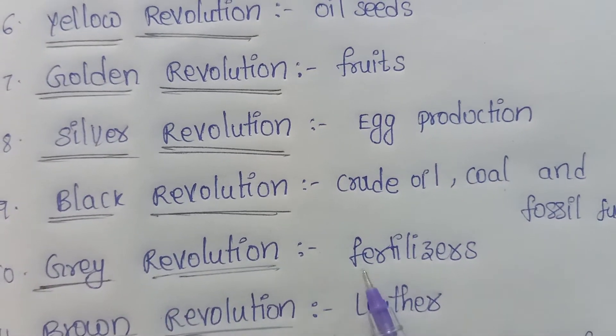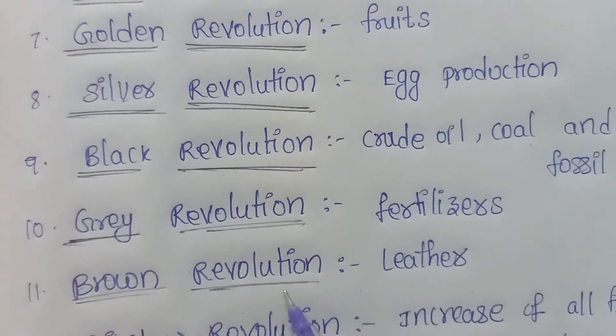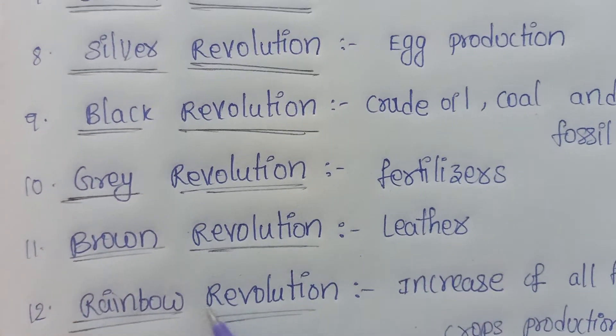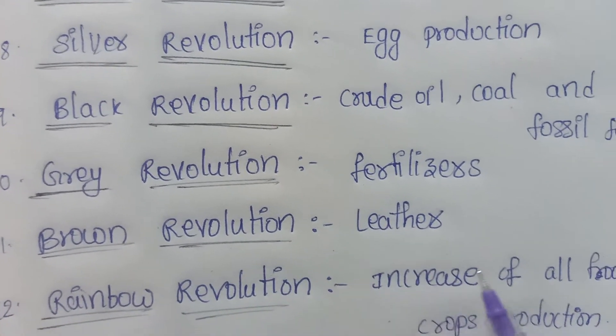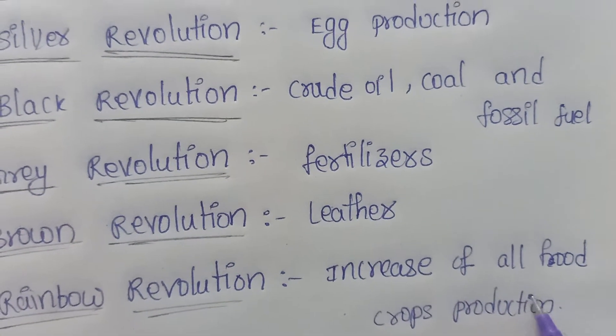Grey revolution is related to fertilizers. Brown revolution is related to leather. And rainbow revolution is related to the increase of all food crops production.